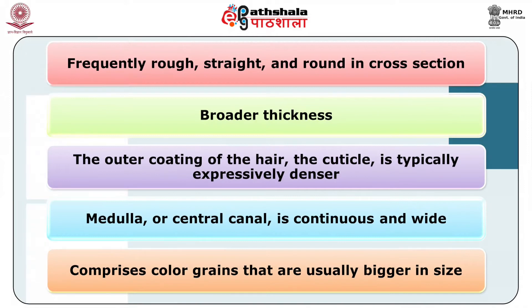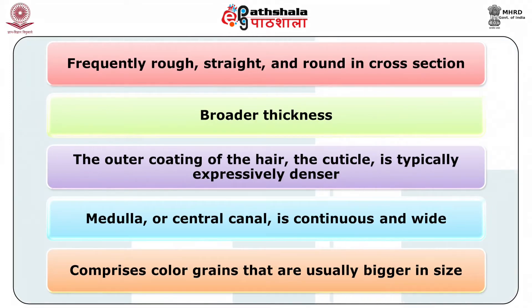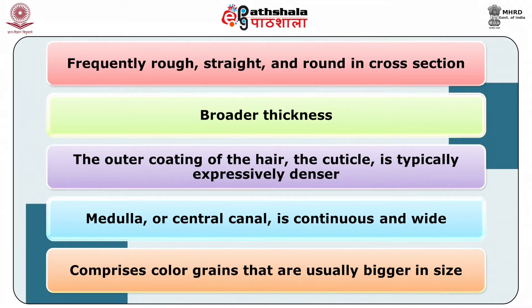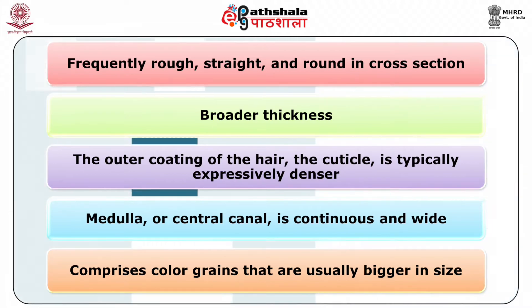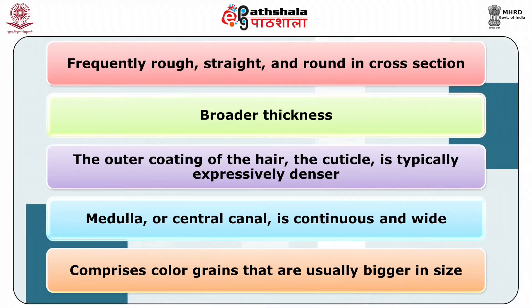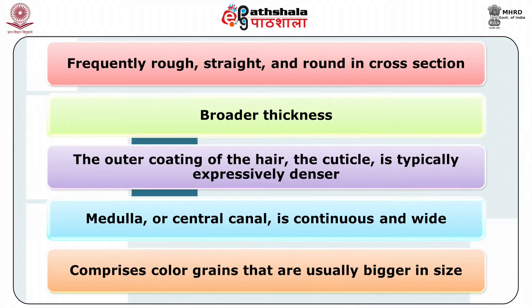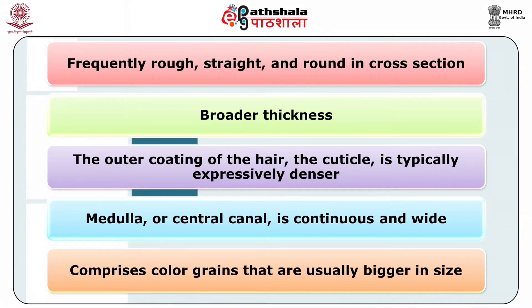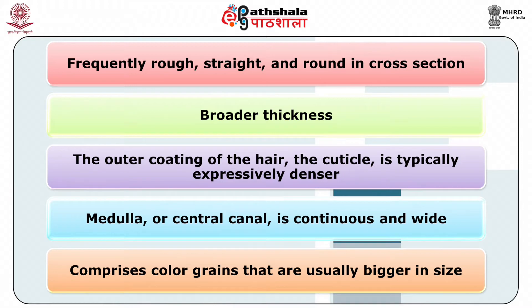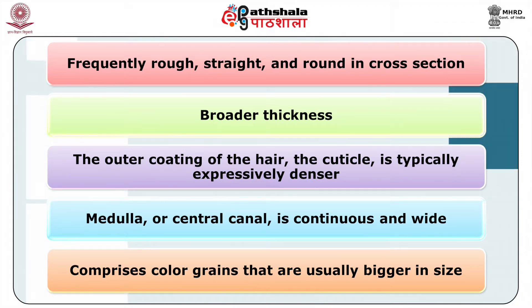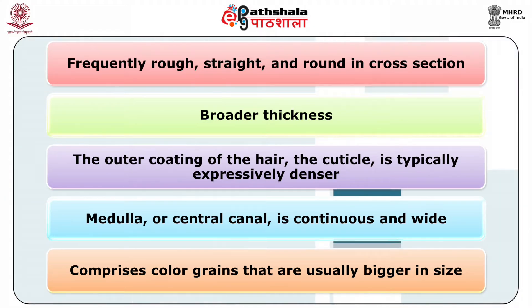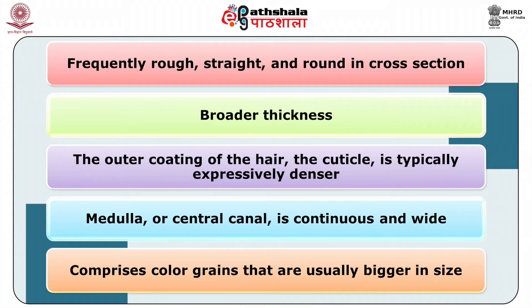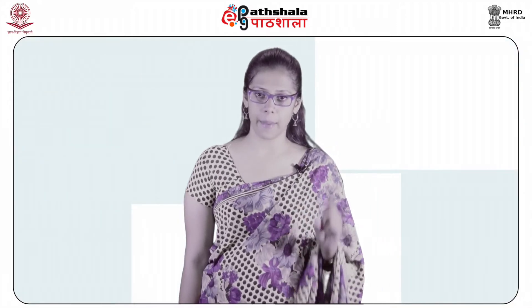Mongoloid or Asian hairs are frequently coarse, straight and round in cross section, with a broader thickness than hairs of other racial groups. The cuticle is typically expressively denser than that of Negroid and Caucasoid hair, and the medulla or central canal is continuous and wide. The cortex of Mongoloid hair comprises color grains that are usually bigger in size than those of Caucasoid hair, and which frequently appear assembled in irregular areas inside the shaft. Mongoloid hairs can have a distinct reddish look as a product of their pigment.